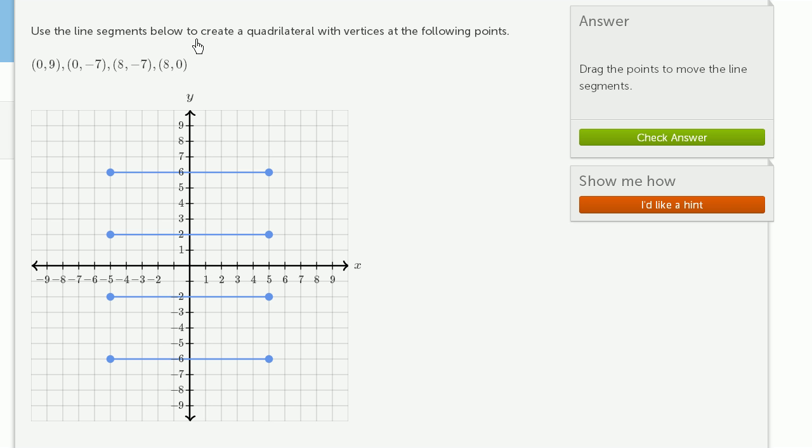Use the line segments below to create a quadrilateral, so a four-sided figure, with vertices at the following points. They give us four coordinates right over here. Those have to be where the sides of our quadrilateral intersect.